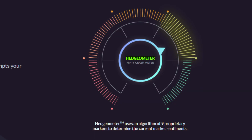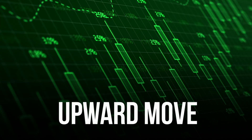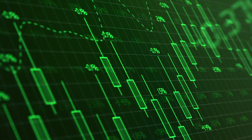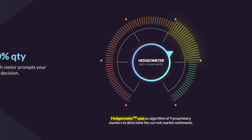What is the Hedger Meter, also known as the Nifty Crash Meter, and how can it be interpreted? The Hedger Meter is the only predictive tool of its kind which will forecast the onset of a crash or an upward move in the Nifty index before it happens, helping investors position their portfolios accordingly. The Hedger Meter uses an algorithm of nine proprietary markers to determine current market sentiment and tells you when to hedge your portfolio and when to keep cash ready to buy stocks in a fall.